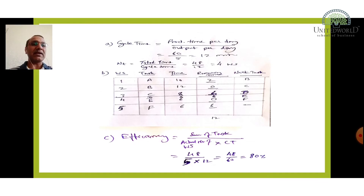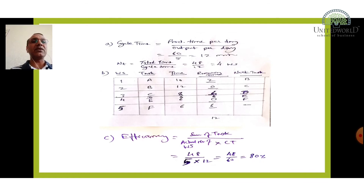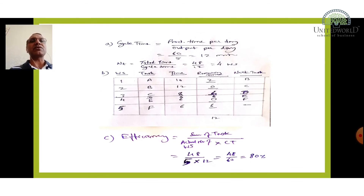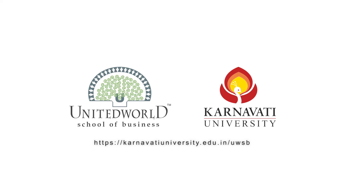To find efficiency: sum of total task time (48) divided by actual number of workstations (5) multiplied by cycle time (12), giving 80% efficiency. So 80% of the time is being utilized. The same can be solved with QM for Windows — I'll prepare another video showing how to switch between different task assignment methods and compare results. When done manually with more tasks and workstations it becomes more complicated, and software is recommended.